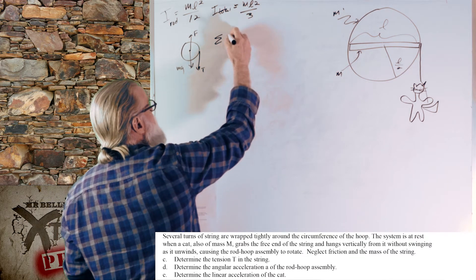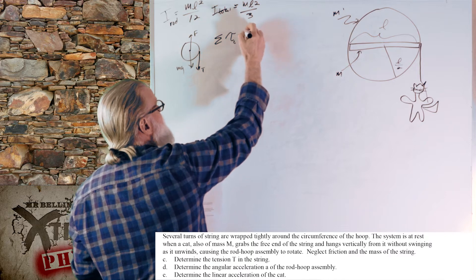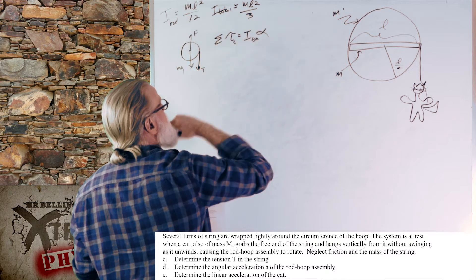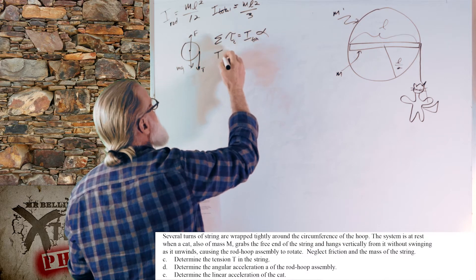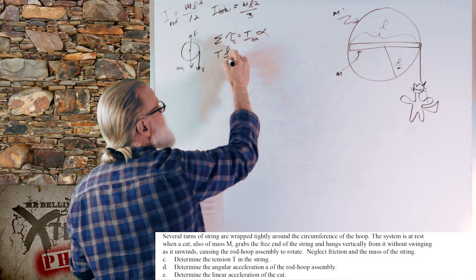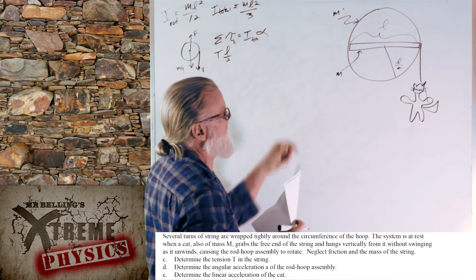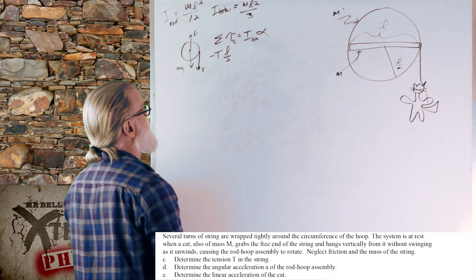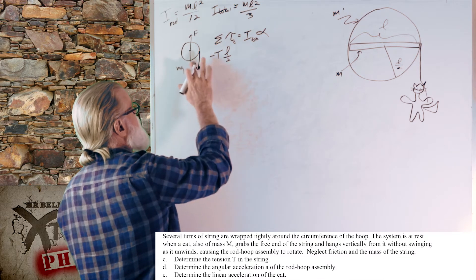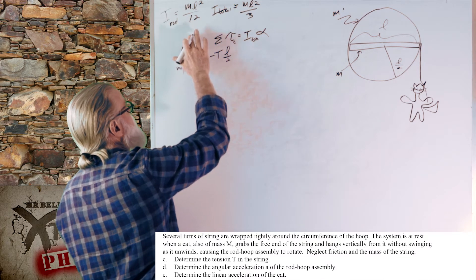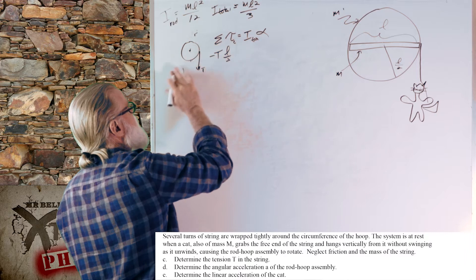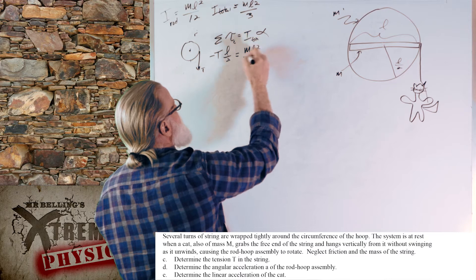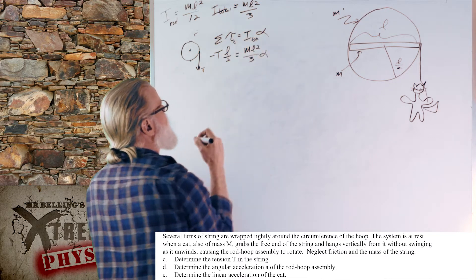The tension acts at the rim, so the torque is tension times L over 2, and it tends to cause rotation in the negative direction. The axle force and gravity don't apply a torque about the center. So: negative T times L over 2 equals ML squared over 3 times alpha.